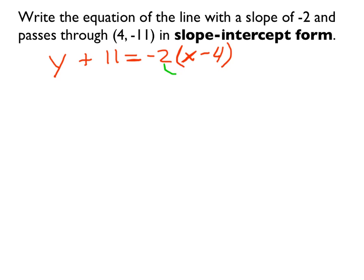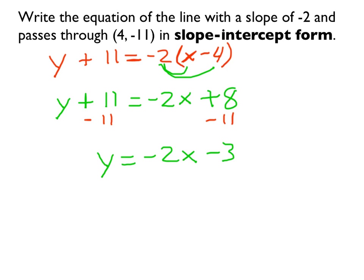First, let's distribute negative 2 across the parentheses. So that leaves us with... Make sure that negative 2 minus 4... Make sure you carry the negatives. We should have plus 8. And then we'll subtract 11 from both sides of the equation. There we go. Slope-intercept form.